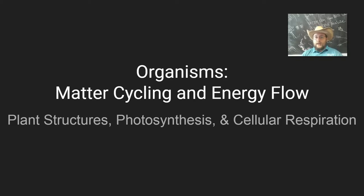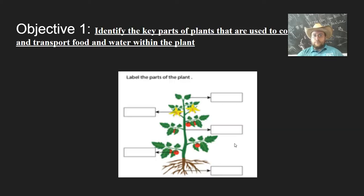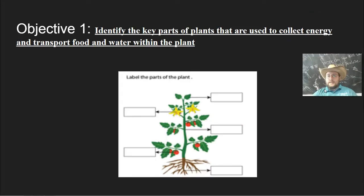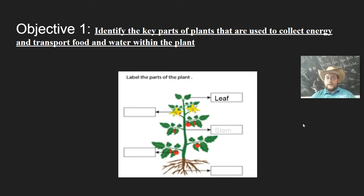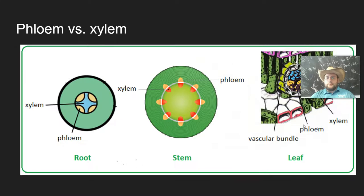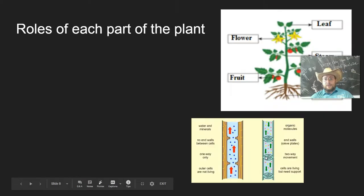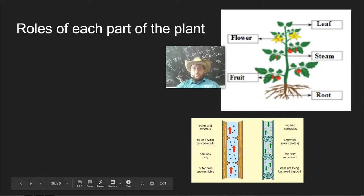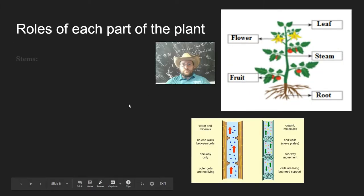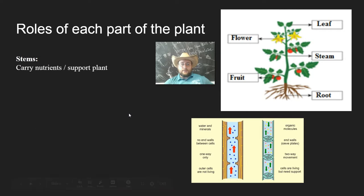On the first objective, we talked about these key parts of the plant that help the plant do its job. We talked about the phloem and xylem, the families of plants, the leaf, and the chloroplast. Let's review what we did on those things.